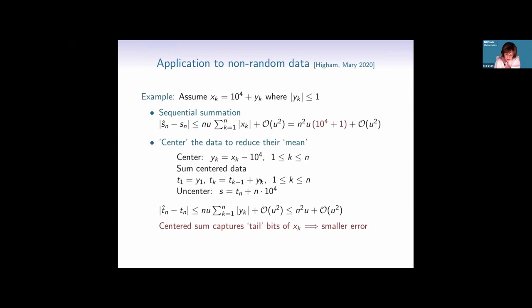Here's an example: assume all summands are ten thousand plus a number at most one. If we do sequential summation, every summand is in magnitude at most 10^4 plus 1. Instead, Nick and Theo's idea is to center the data — this removes the most significant bits so that the y_k retain the least significant bits. We compute the sum from the least significant bits, then add back the subtracted values at the end. The centered sums capture the tail bits and therefore incur a smaller error.